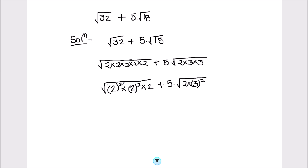Now we can take these squared numbers out of the square root sign, because the square and square root sign will get cancelled. We can show it like this: this square gets cancelled with the square root sign, square gets cancelled with the square root sign. Now this will be 2 times 2 times square root of 2 — one 2 will be inside the square root — plus 5 times 3 times square root of 2.